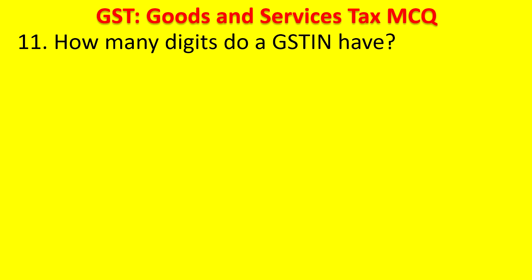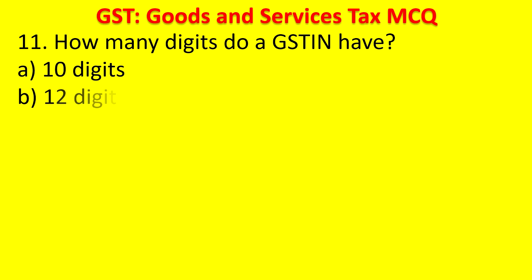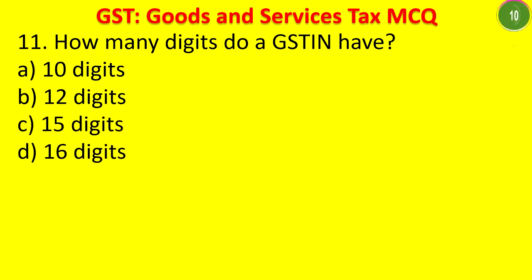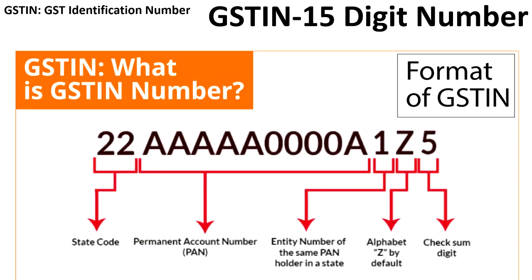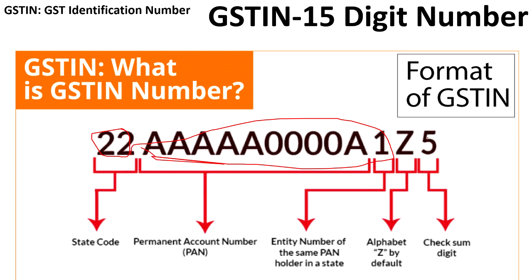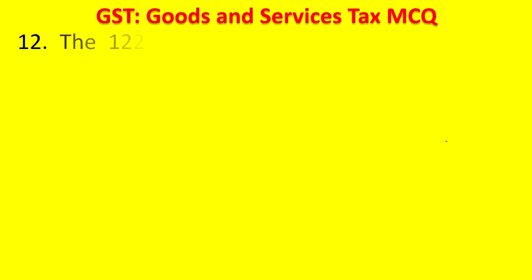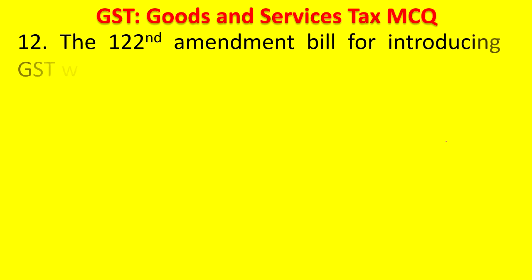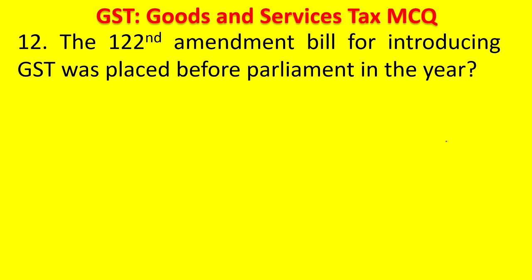Question 11: How many digits does a GSTIN have? Options: 10, 12, 15, or 16 digits. The answer is 15 digits. In a GSTIN, the first two digits are state codes, the middle portion is the PAN number of the consumer or firm, and the last three digits are unique random numbers. This GSTIN is used for filing returns and identifying the customer.